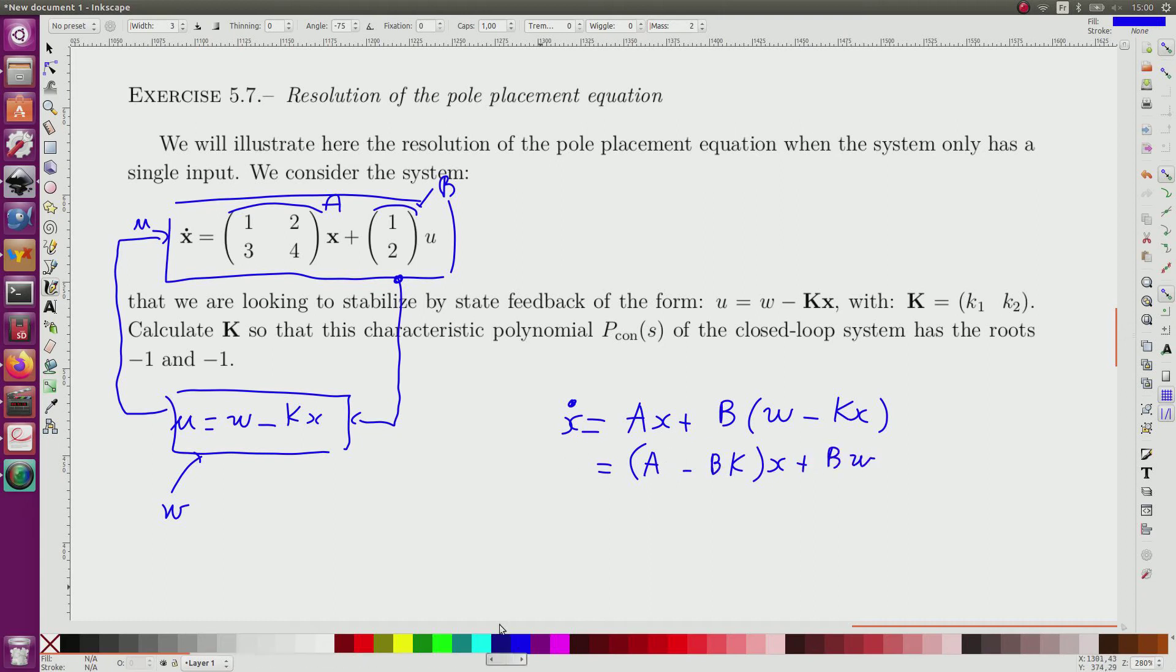Recall that for the stability I need this to have the poles that I want. This matrix should have the eigenvalues corresponding to minus 1 and minus 1 here.